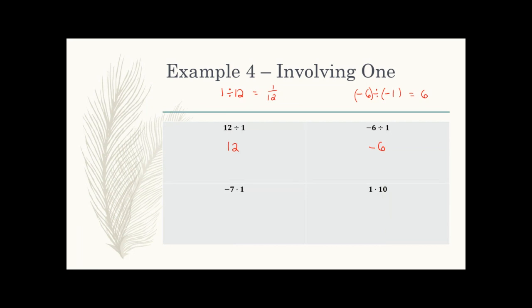Bottom left: negative seven times one. Multiplying by one doesn't change anything, so the answer is negative seven. If you had negative seven times negative one, that changes the sign and gives you positive seven because two negatives give a positive. Bottom right: one times ten — anything times one is itself, so that gives me ten.